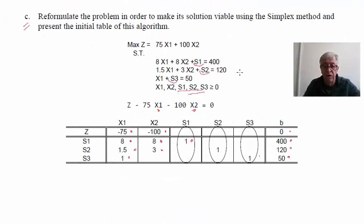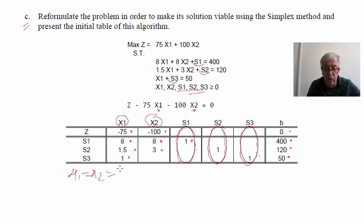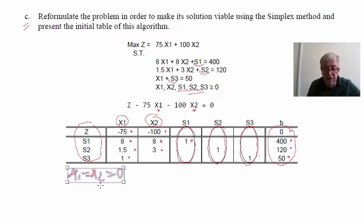This is the initial simplex table because we can identify unit vectors corresponding to s1, s2, and s3 as the initial basic variables. Setting x1 = x2 = 0 (non-basic variables), we immediately extract the solution: Z = 0, s1 = 400, s2 = 120, s3 = 50. This is readable directly from the table using the system of equations.